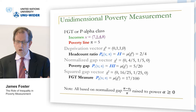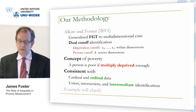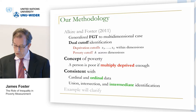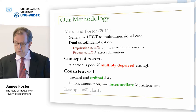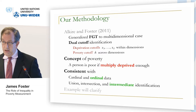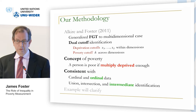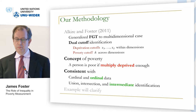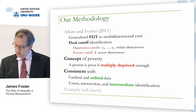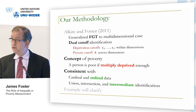Our multidimensional methodology generalized the FGT class to a multidimensional case using dual cutoff identification. We put it into effect using deprivation cutoffs — one for each dimension; if you're below it, you're deprived in that dimension — and a poverty cutoff looking at the weighted share of dimensions in which you're deprived. If you're at or above the cutoff, you're considered poor. The concept is that a person is poor if multiply deprived enough. The approach is consistent with cardinal and ordinal data and with all identification approaches including union, intersection, and intermediate.